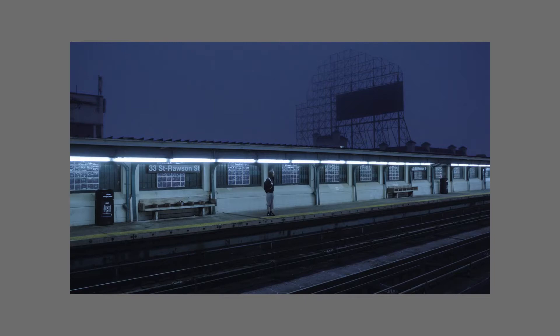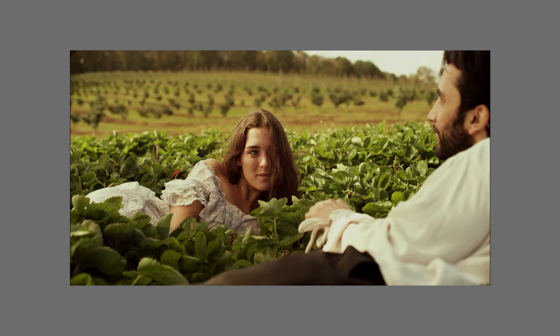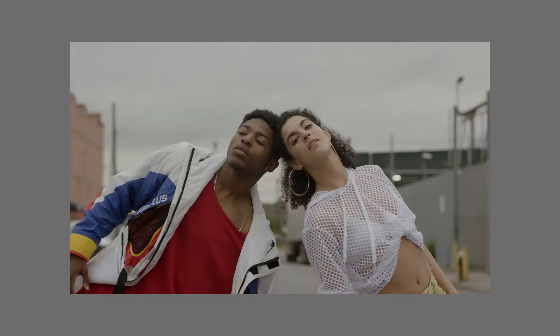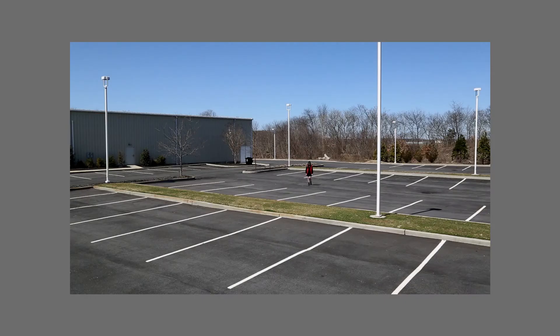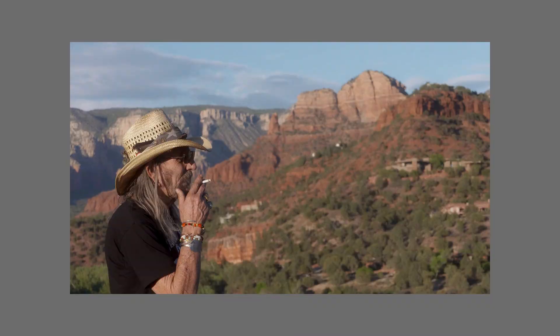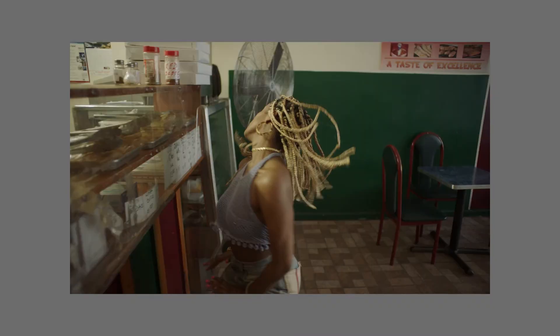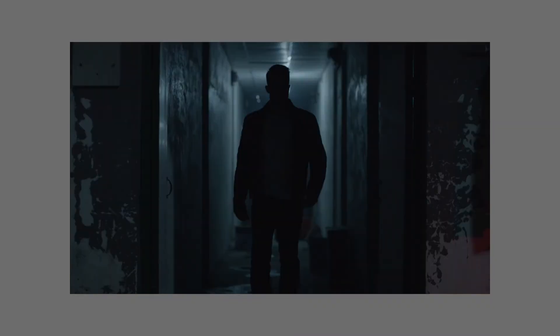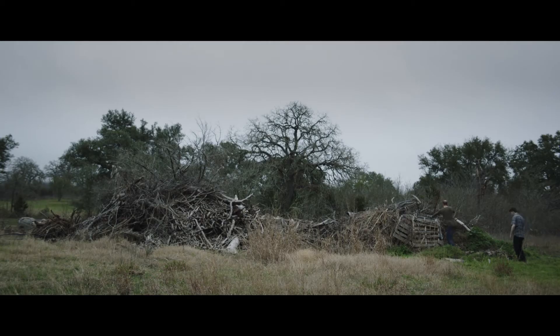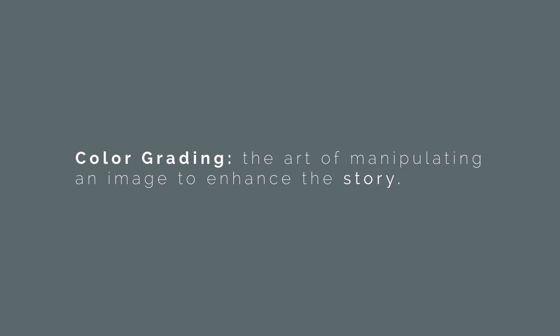A film is a sequence of images that together form a story. When we think of some of our favorite films, what tends to come to mind is what the image looks like, the story behind it, the emotion behind it, the characters. Color grading is the art of manipulating an image to enhance the story.